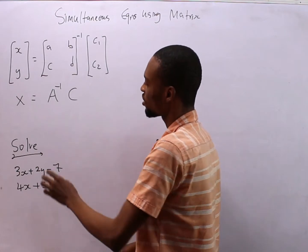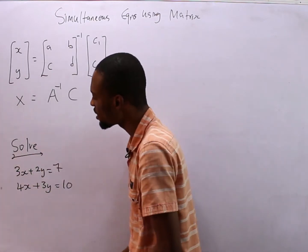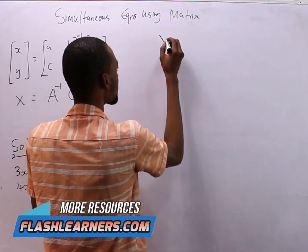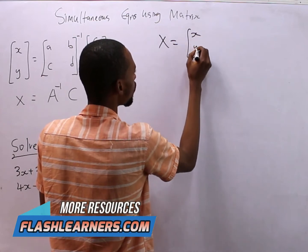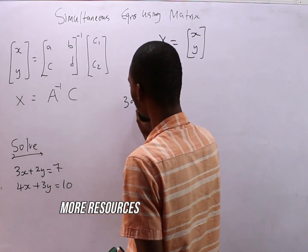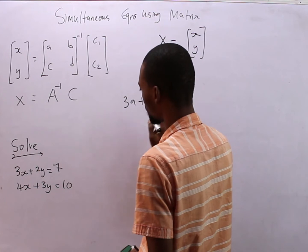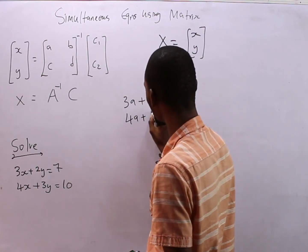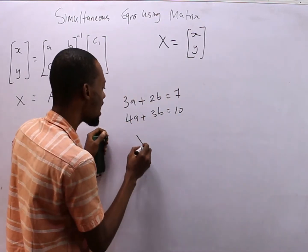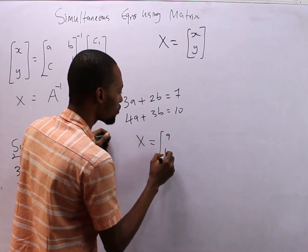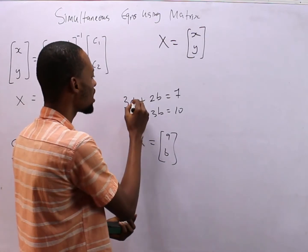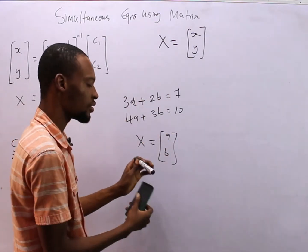To get X from here is simply you look at this simultaneous equation, that's x and y. So this capital letter X is simply x, y. Now what if it is something like 3a plus 2b equals 7 and 4a plus 3b equals 10? X will simply be a, b. It represents the unknown or the values we are looking for. No matter what it is, you put the variables here.